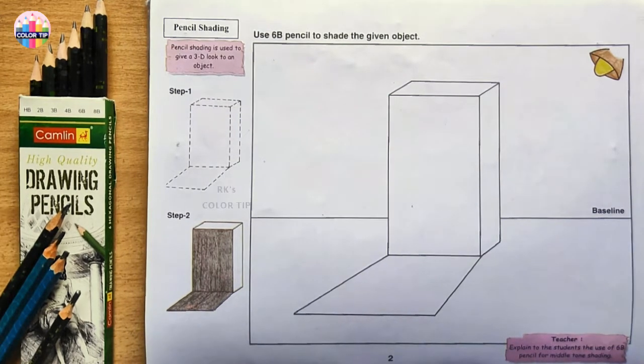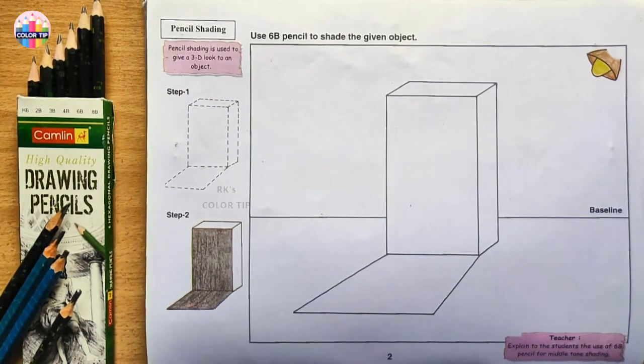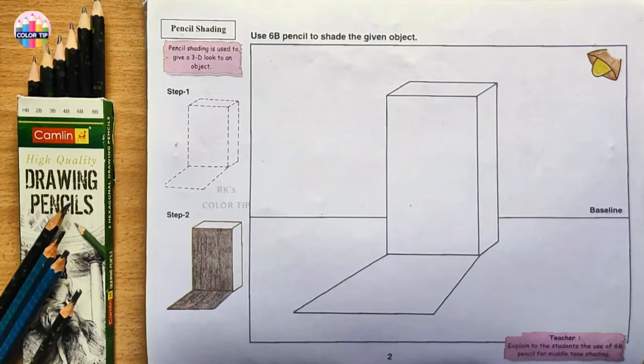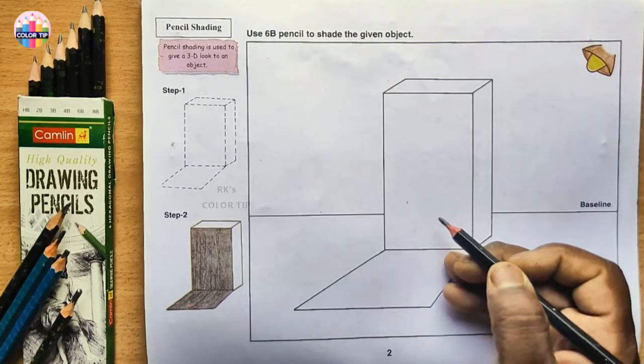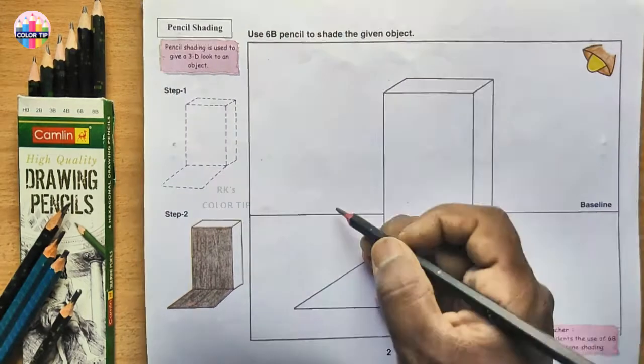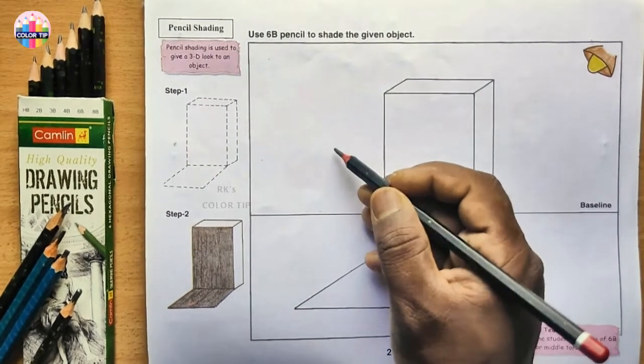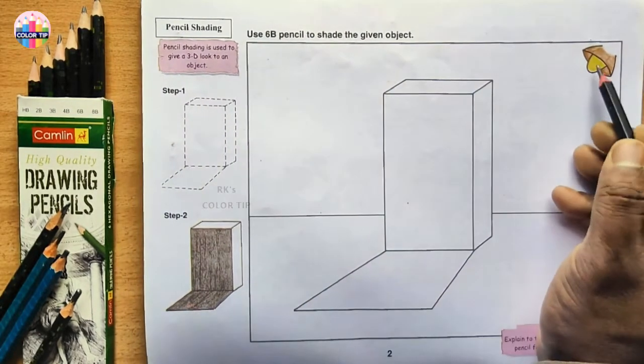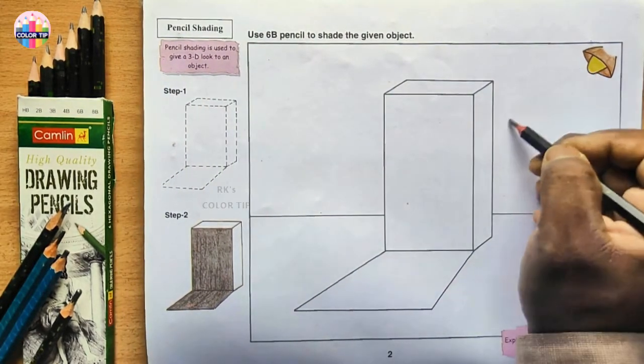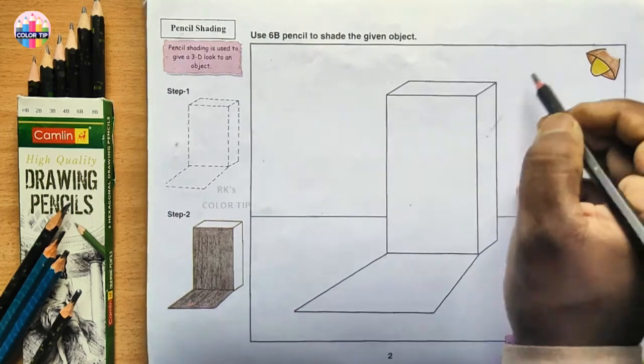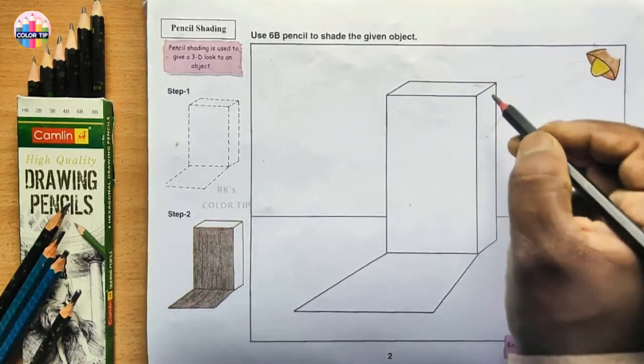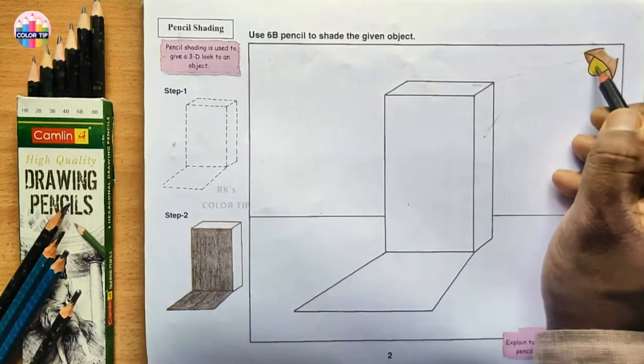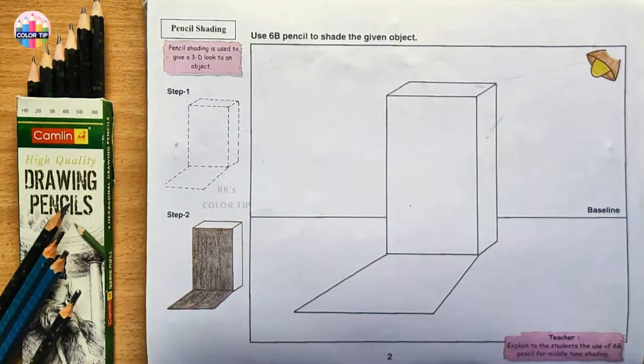Here one object is given, a cuboid, showing the light source from the right top corner. The shadow is on the opposite side. An example is given here, a cuboid with a baseline. Above the baseline we call this part the background, and below the baseline we call it the foreground. Light is placed here. The light source may reach this part here and this one as well, but this face is completely opposite to the light.